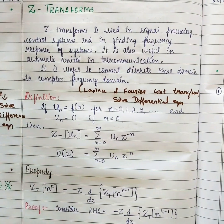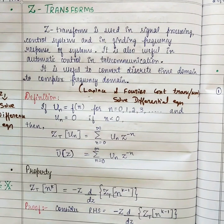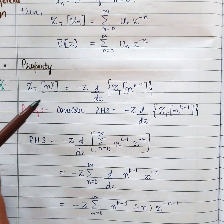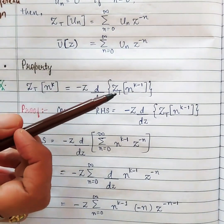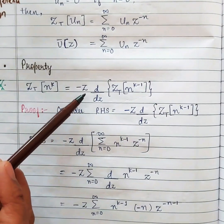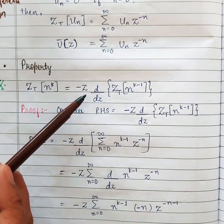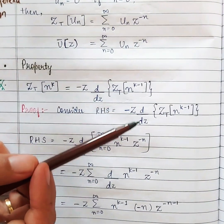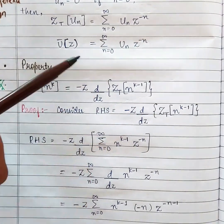We will be solving difference equations and we have a few properties and basic formulas. Try to memorize the formulas because we will be using the same set for inverse Z transform also. Coming to the first property: Z transform of n^k equals minus z times d/dz of Z transform of n^(k−1). We have to prove this, starting from the right-hand side.